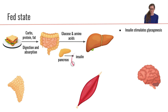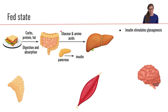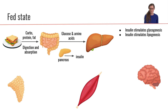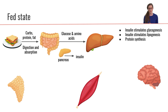So what's going to happen now? Insulin is going to stimulate glycogenesis in the liver. The liver is going to take some of that glucose it just absorbed and turn it into glycogen for storage. Insulin is also going to stimulate some lipogenesis, because we have only a limited capacity to store glycogen, so excess glucose will also get shuttled towards lipogenesis and be turned into fat.